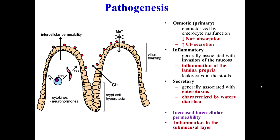Pathogenesis involves 3 main mechanisms causing diarrhea. First, osmotic — characterized by intracyte inflammation, malfunction, decreased sodium absorption, and increased chloride secretion. Second, inflammatory — associated with invasion of the mucosa, inflammation of the lamina propria, and pus cells or leukocytes seen in stools. Third, secretory — associated with production of toxins characterized by watery diarrhea. There is increased intestinal permeability and inflammation in the submucosal layer.